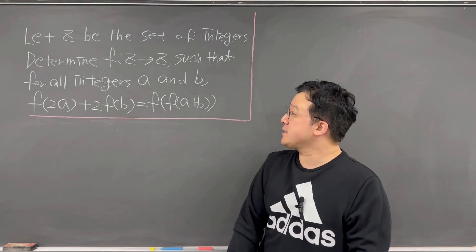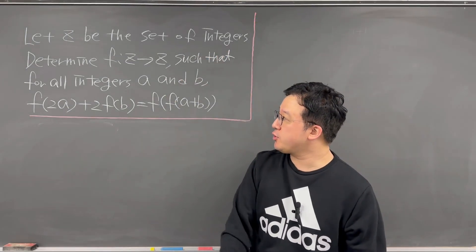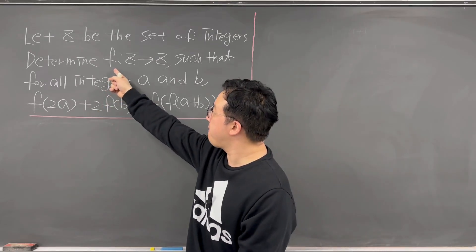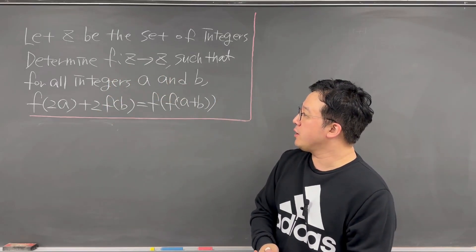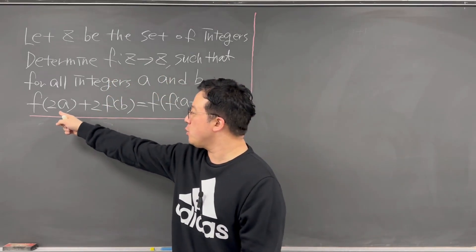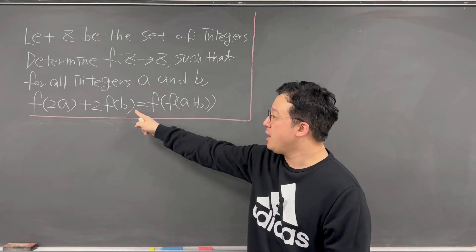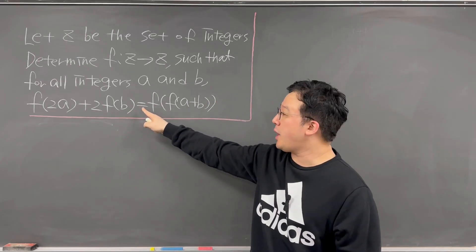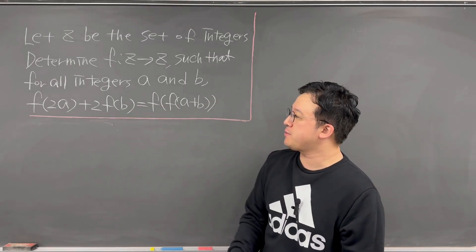Okay, here's the question. Let Z be the set of integers and determine this function f from Z to Z, such that for all integers a and b, we have f of 2a plus 2 times f of b is equal to f of f of a plus b.